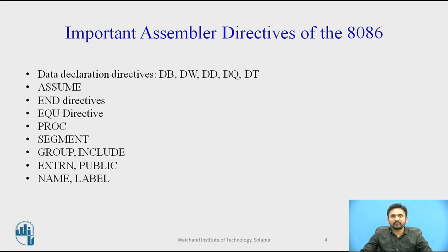Some of the important assembler directives include data declaration directives such as DB, DW, DD, DQ, DT, then ASSUME, END directive, EQU directive, PROC, SEGMENT, GROUP, INCLUDE, EXTERNAL, PUBLIC, NAME, LABEL, and others. Let us check briefly one by one.